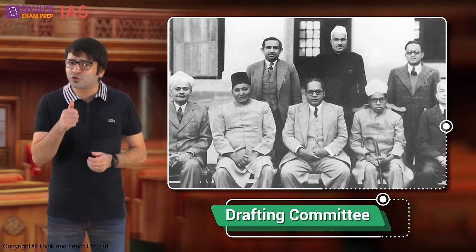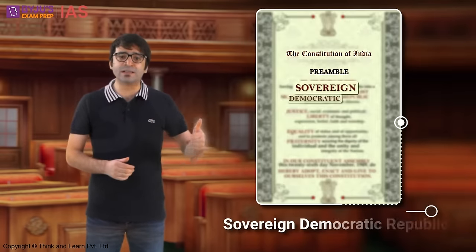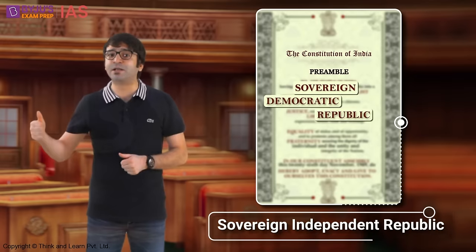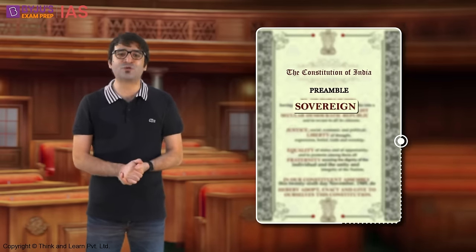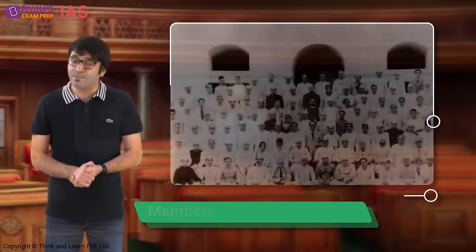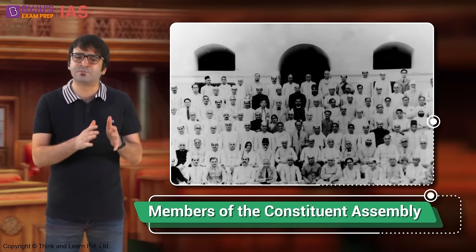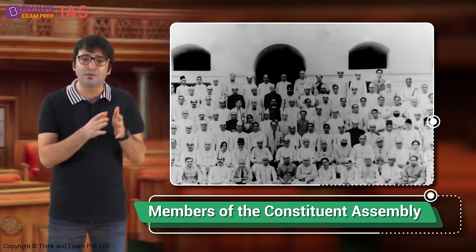After deliberating on a range of issues, the drafting committee made two minor changes to the resolution and incorporated it in the preamble. The committee adopted the expression 'sovereign democratic republic' instead of 'sovereign independent republic,' as it considered independence to be implied in the word 'sovereign.' The committee also introduced a clause on fraternity to emphasize the need for fraternal concord and goodwill. Several parallels have been drawn between the Objectives Resolution and the preamble, to the extent that the former has been termed the 'supernatural preamble' to the constitution.